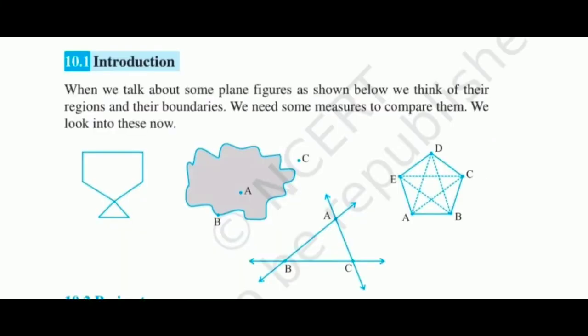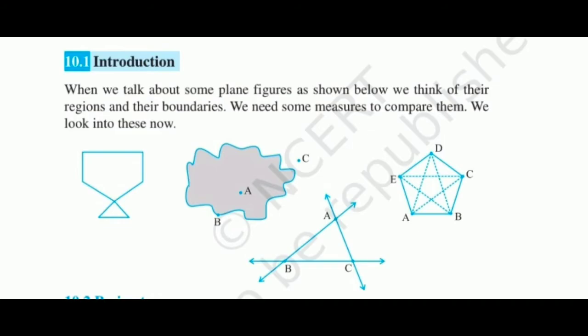When we talk about some plane figures as shown below, we think of their regions and their boundaries. We need some measures to compare them. What is perimeter? In geometry, perimeter can be defined as the path or the boundary that surrounds a shape. It can also be defined as the length of the outline of a shape.